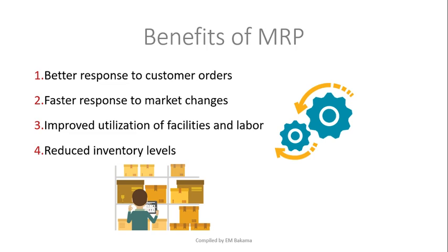When a company knows exactly how many materials they have on hand, it's easier to assess whether a customer order can be processed and how quickly. This improves delivery speed. It also improves utilization — how well a company uses its facilities — because when materials are available, production can start immediately without delays waiting for stock to arrive.